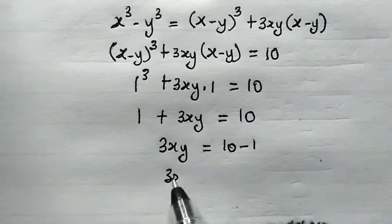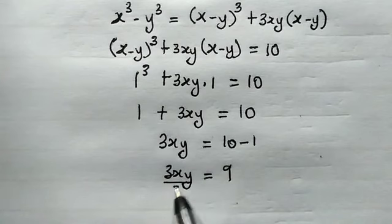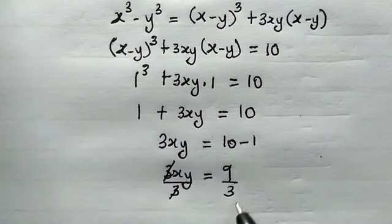So from here we get 3xy is equal to 9. So let's divide both sides by 3 since we are interested in solving for the value of x times y.